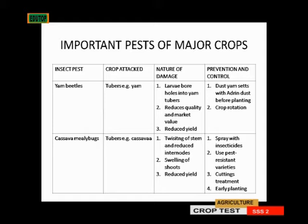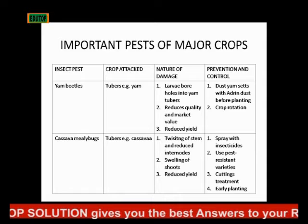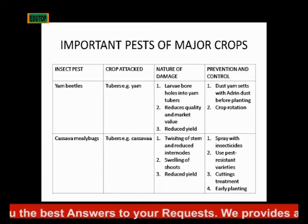The next insect pest is the cassava mealybug. It also attacks tubers such as cassava. It twists the stem and reduces the internodes of the plant, then the shoots — the upper parts — are swollen, and it causes reduced yield.